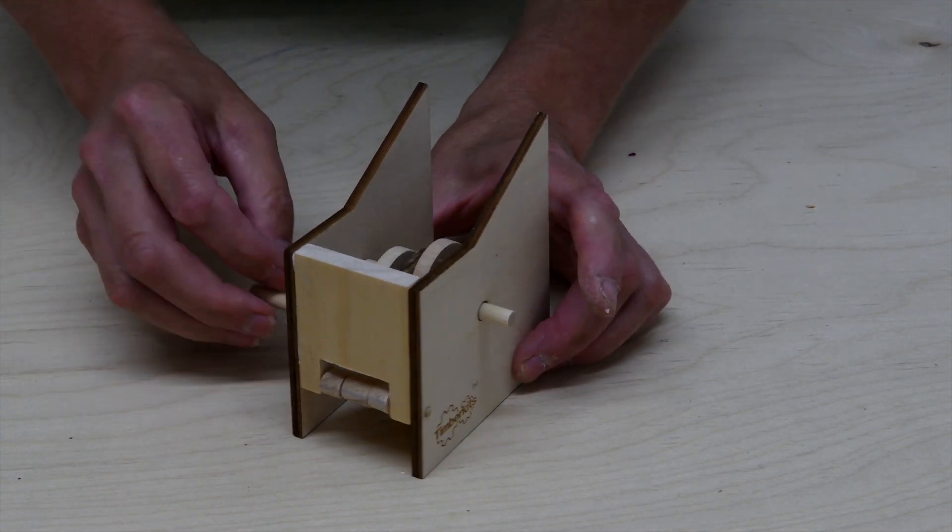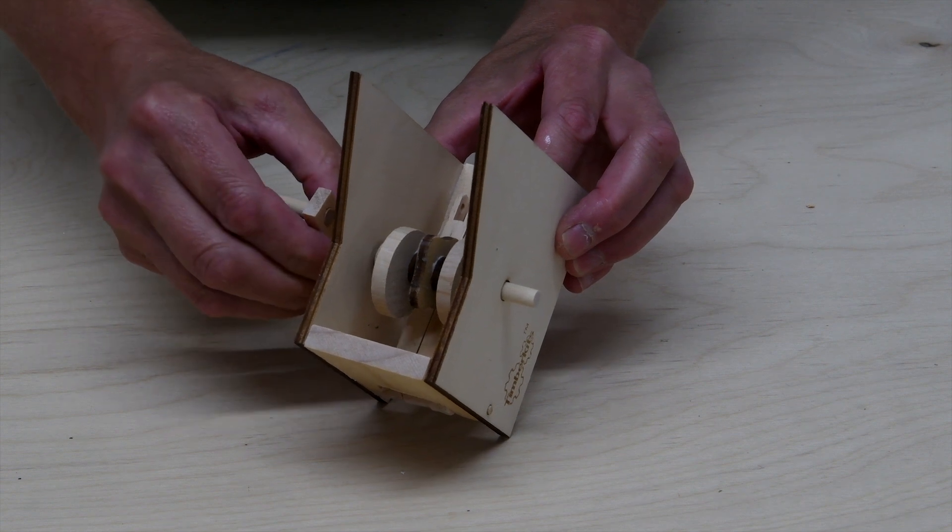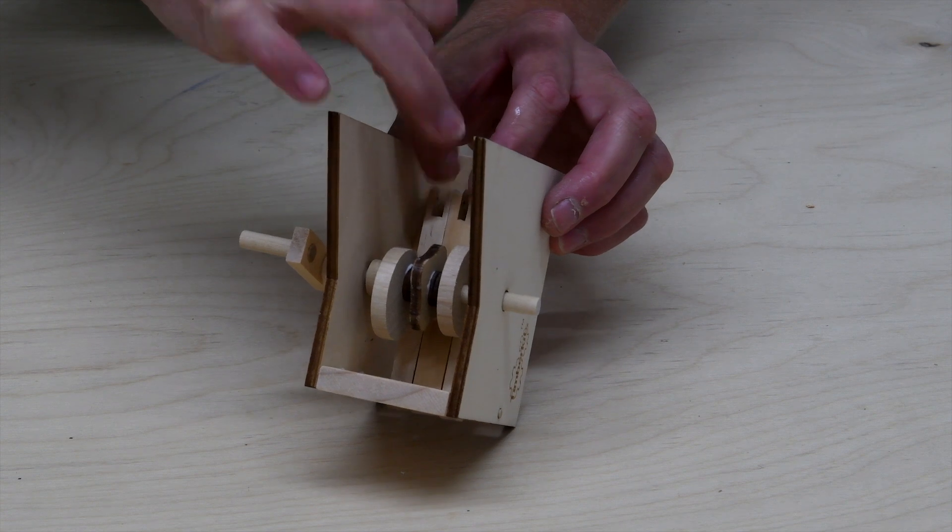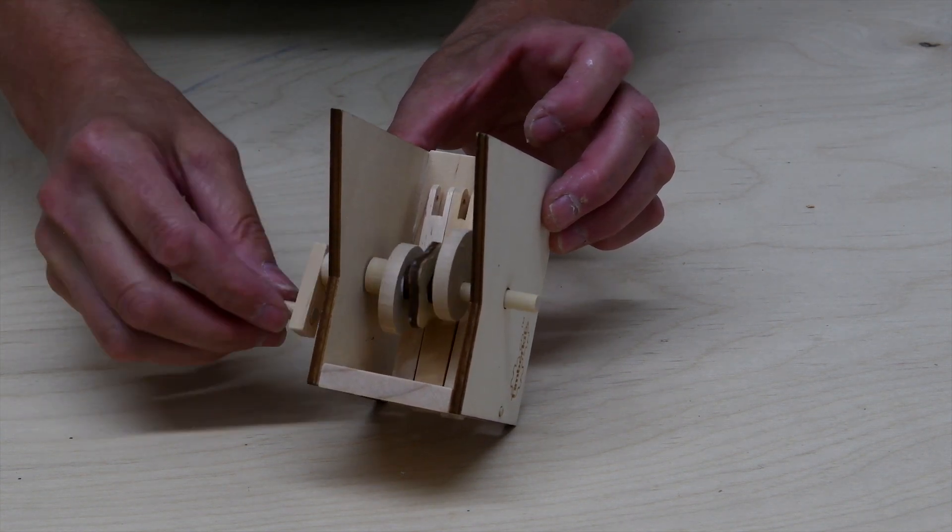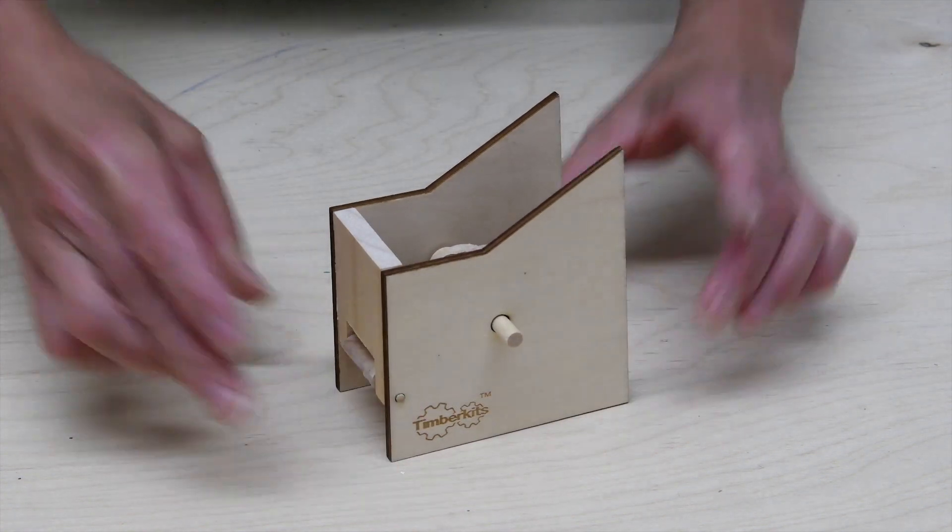Then before the glue's dried, you sometimes need to pull the handle out slightly because you want each cam to be directly above the cam followers below. So just check that's happening and then leave to dry.